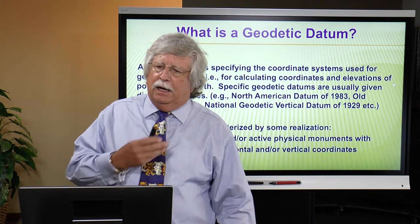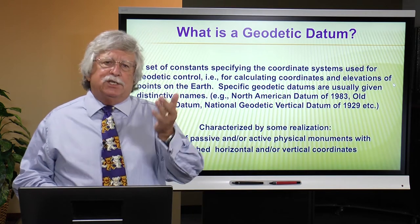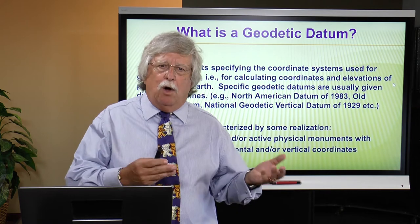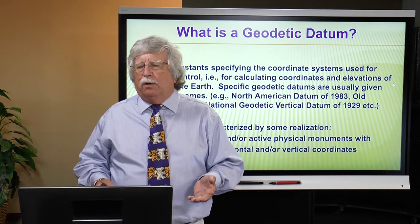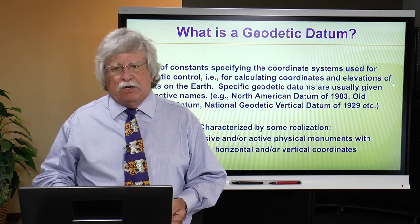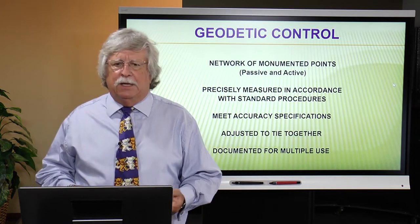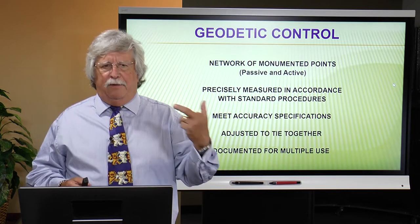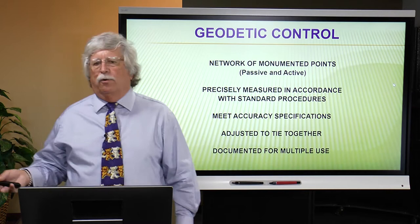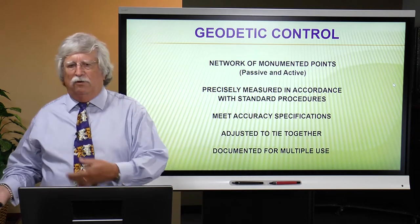Just like the horizontal datum, it's defined by some set of survey monuments where you can go and access accurate heights, so that you can produce new heights, whether through leveling or through GNSS observations. When someone quotes you a particular accuracy statement — oh, it's a first order benchmark, or it's a third order benchmark — those are national standards. There are documents out there that tell you exactly what a first order benchmark is versus a third order benchmark.